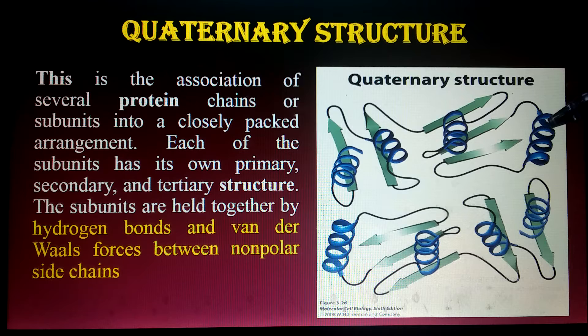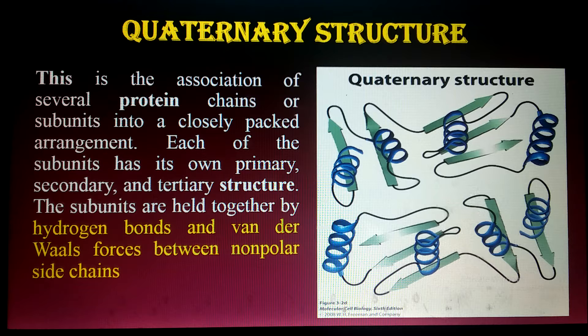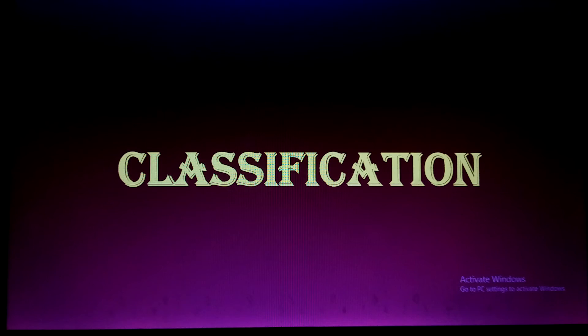The quaternary structure is the association of several protein chains or subunits into a closely packed arrangement. Each subunit has its own primary, secondary, and tertiary structure. The subunits are held together by hydrogen bonding and van der Waals forces between non-polar side chains. This is the progression from primary to secondary to tertiary to quaternary structure.